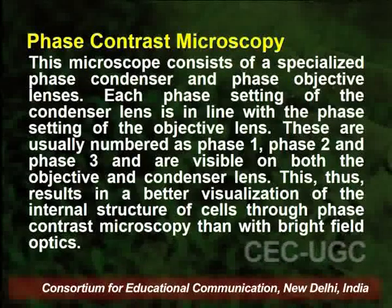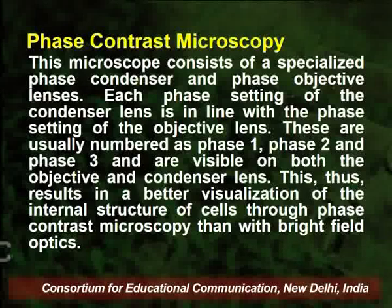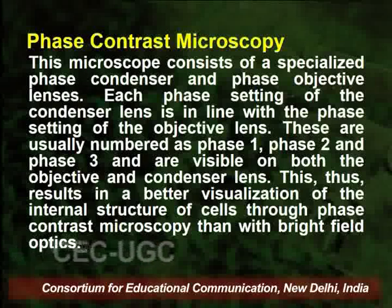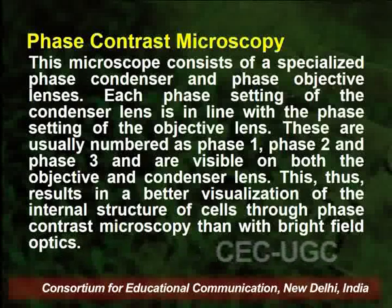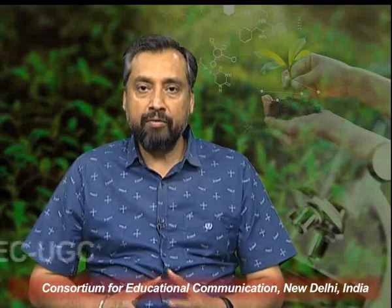A phase contrast microscope consists of a specialized phase condenser and phase objective lenses. Each phase setting of the condenser lens is in line with the phase setting of the objective lens. These are usually numbered as phase 1, phase 2, and phase 3, and they are visible on both the objective and condenser lenses. This results in better visualization of the internal structure of cells compared to bright field microscopes.